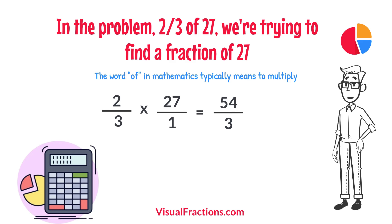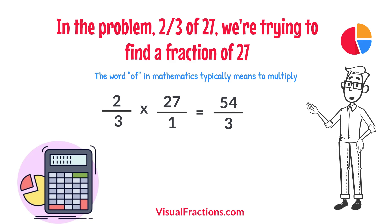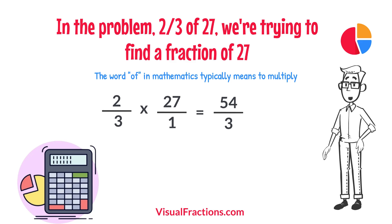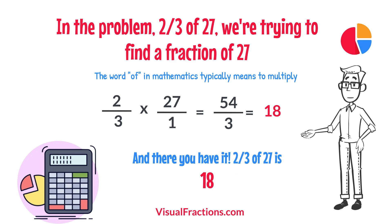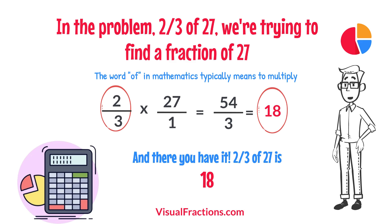To find the final answer, divide the numerator by the denominator. So, 54 divided by 3 equals 18. And there you have it — two-thirds of 27 is 18.